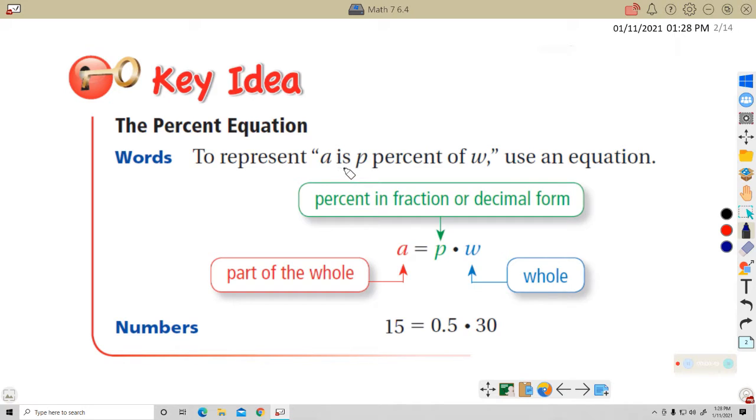The percent equation: A is P percent of W. So A is, which equals—when you think of 'of,' you should think multiply. A, that's the part of the whole, equals what percent of the whole.